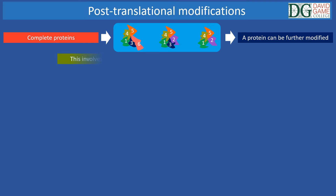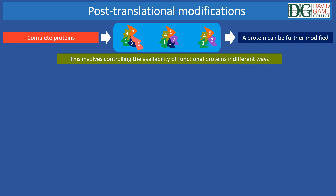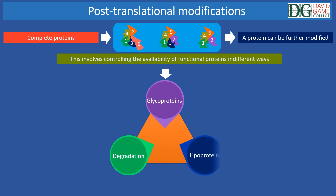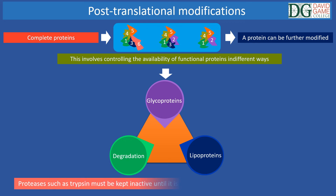Post-translational modifications involve controlling the availability of functional proteins in different ways, such as degradation, where part of a protein is removed, or adding a sugar molecule to form glycoproteins, or fat molecules to form lipoproteins. Also, proteases such as trypsin must be kept inactive until secreted out of the cell.